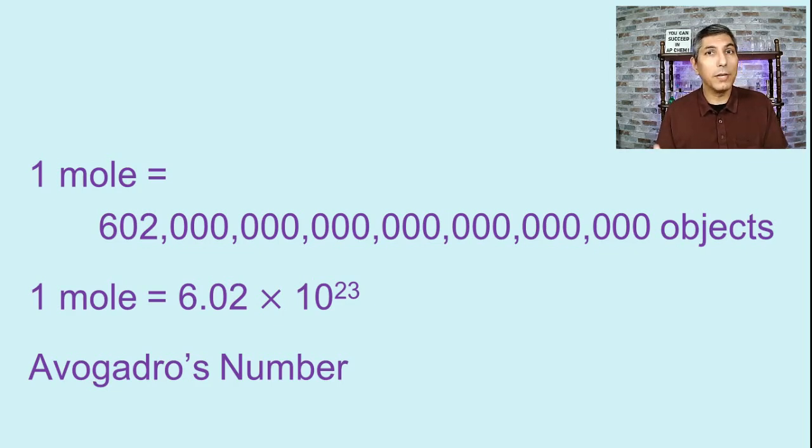Some students get intimidated working with this number and the mole concept. Remember, this is just a number that's convenient for talking about a large number of very tiny particles. In your everyday life, you use specialized units for certain things. For example, if you go to the grocery store and buy eggs, normally we don't buy just one egg. Most people buy eggs by the dozen, which is 12 eggs. That's just a unit that's convenient for counting eggs.